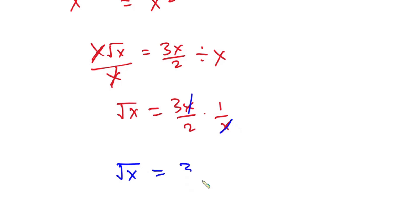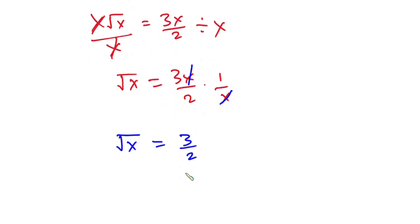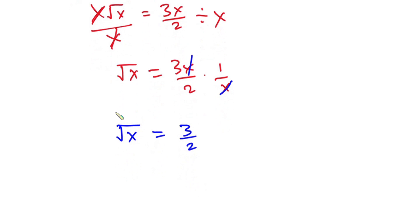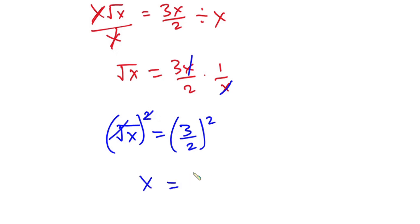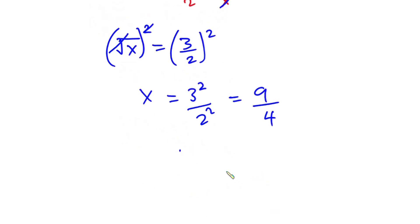Since we are looking for x, let's raise each side of the equation to the second power. The square cancels the square root, giving us x equals three squared over two squared, which equals nine over four. So using this approach, x equals nine over four.